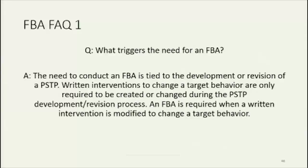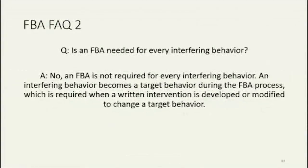An FBA is required when a written intervention is modified to change a target behavior. An FBA is not required for every interfering behavior — interfering behavior actually becomes a target behavior during the FBA process, which is required when those written interventions are developed or modified to change a target behavior. If you are developing a positive support transition plan, an FBA would be required, and there are areas where you need to note the outcomes of that FBA on the positive support transition plan itself. Any substantial change to Parts B or C of the positive support transition plan would require an accompanying FBA. Parts B and C cover target behaviors and target interventions within the positive support transition plan.